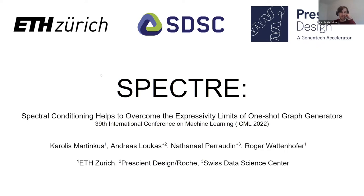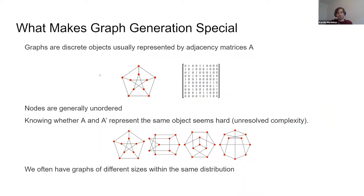As a reminder, what makes graph generation special? Graphs are discrete structures we usually represent as matrices, but they're not really matrices, because you can permute them and technically have the same graph. After permutation, it's very non-trivial to tell that two graphs are actually the same. Furthermore, the number of nodes in graphs can vary, which means we cannot just generate them as matrices. We need to do something smarter.